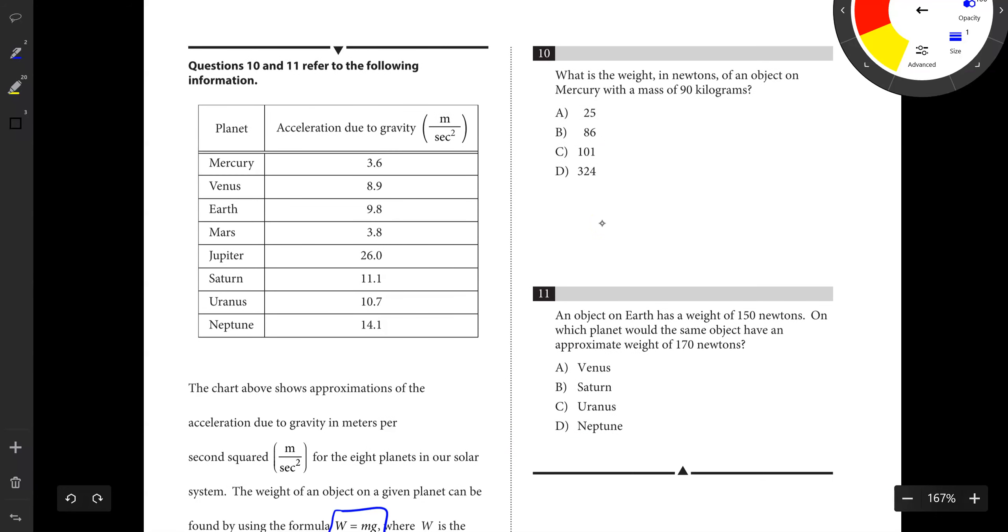Number 10 says, what is the weight? So we're trying to find W. What is the weight in Newtons of an object on Mercury with a mass of 90? So we know our mass is 90. We know we're on Mercury and the gravity is 3.6 on Mercury. So our W value is going to be 90 times 3.6, which gives us 324.